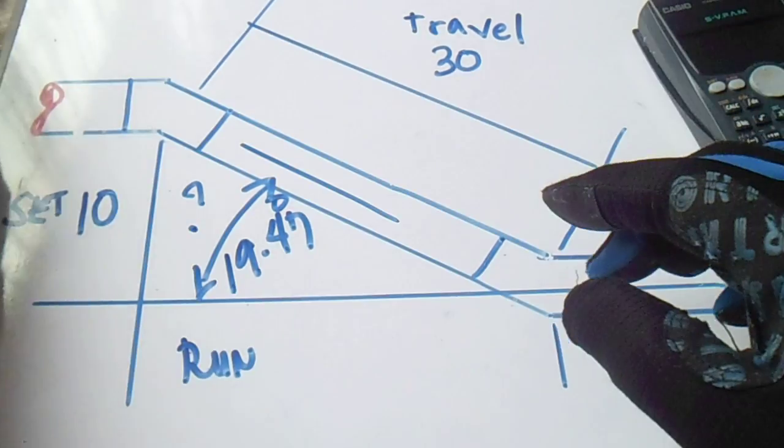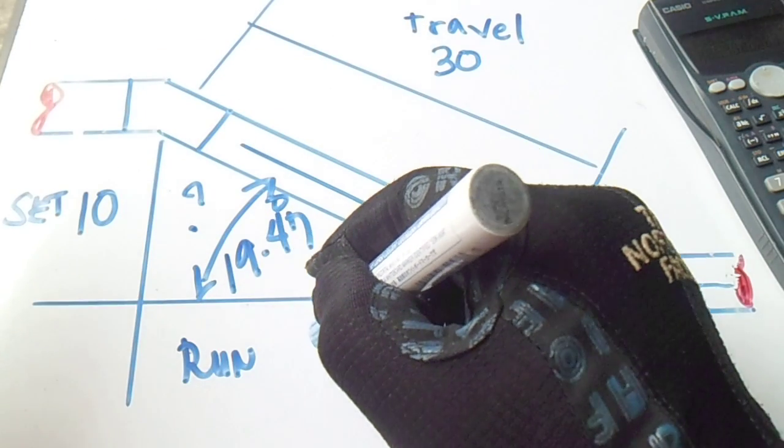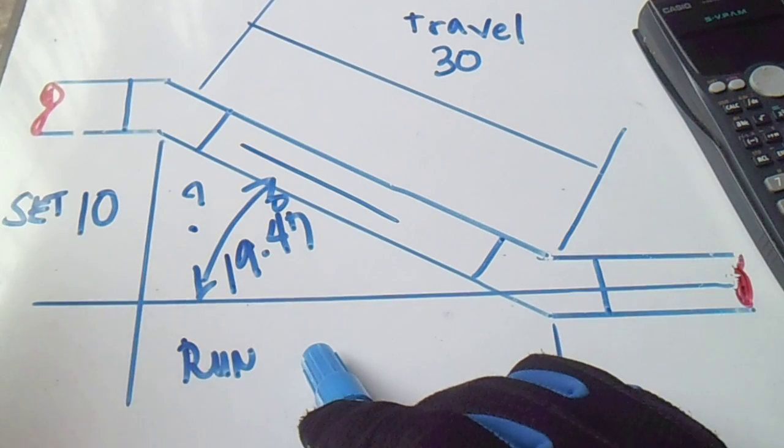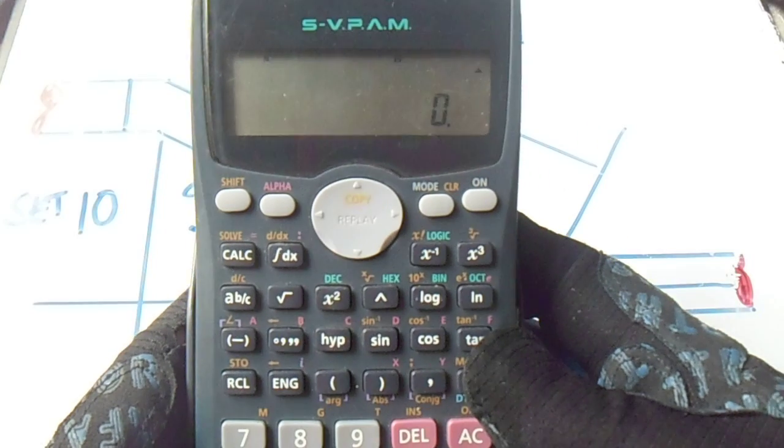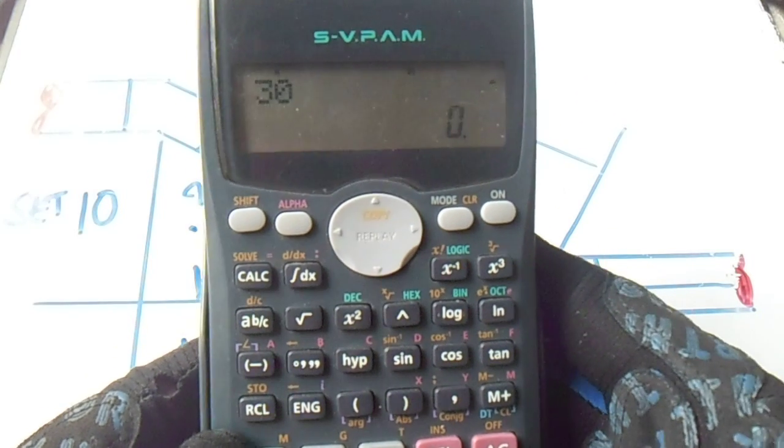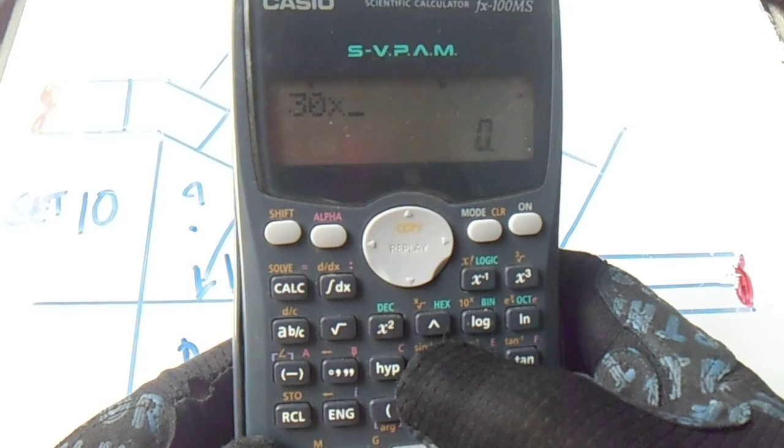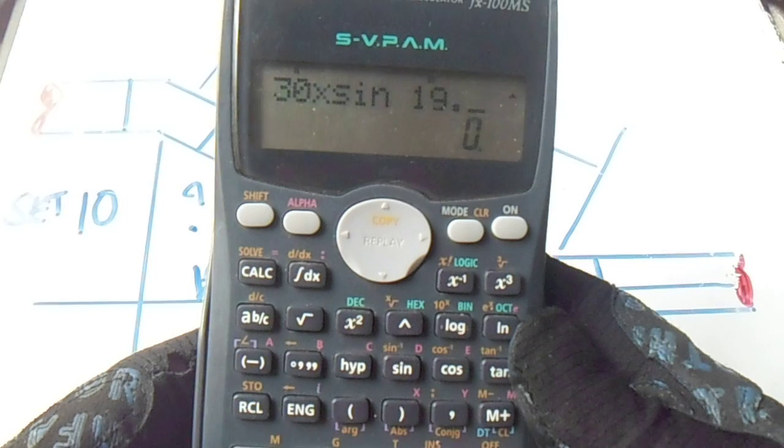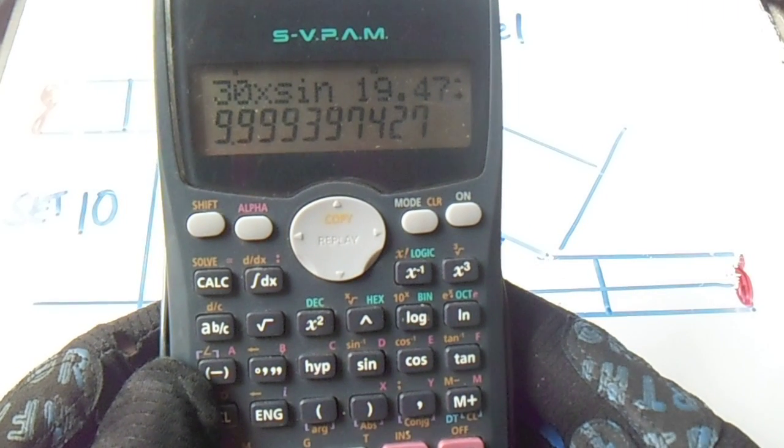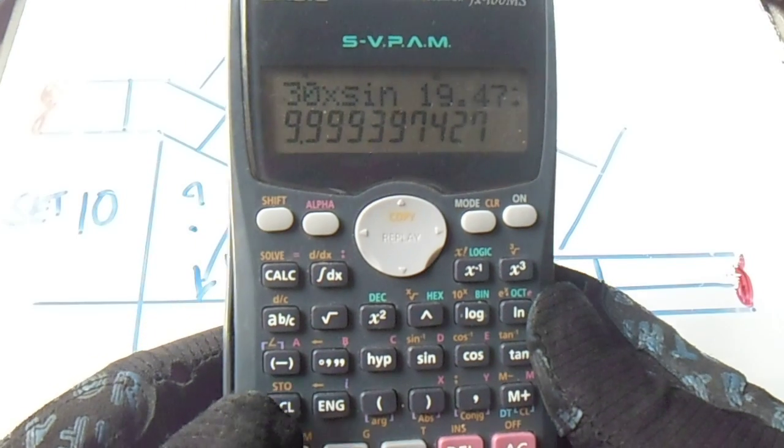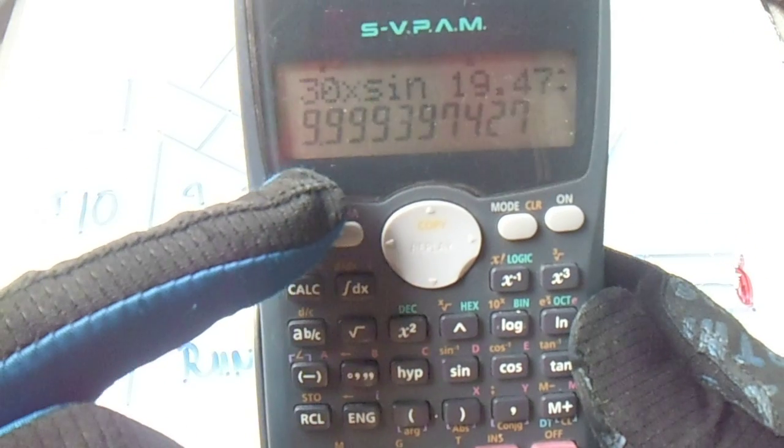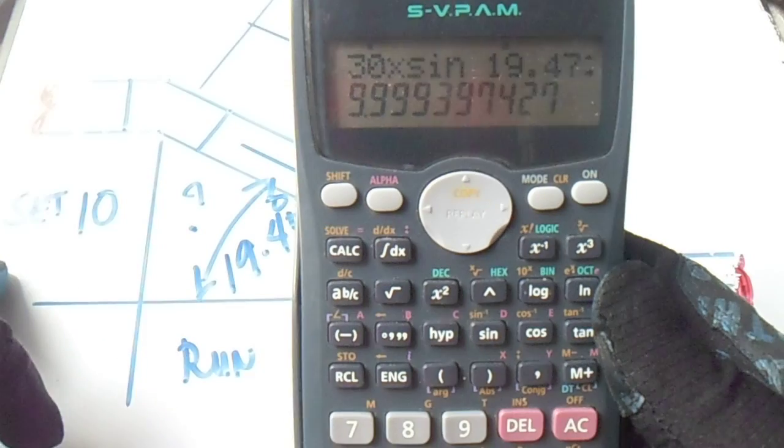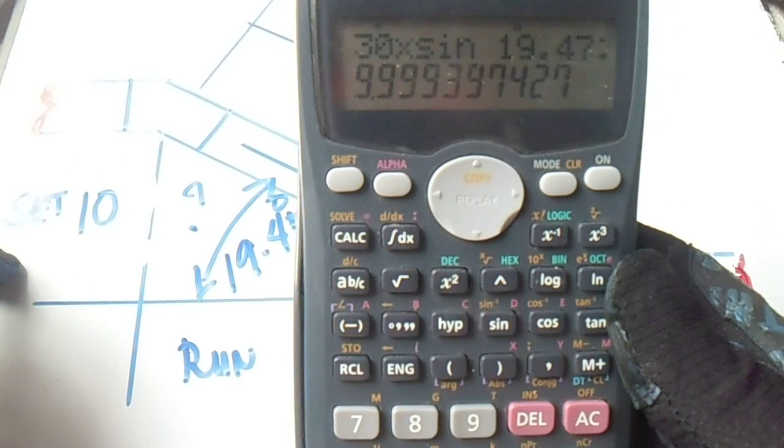We will compute also this run, and to compute this, this is the formula. So travel 30 multiply it by sine 19.47 degrees. So this is 10. I mean, we will compute the set, so the answer is 9.9. This is 9.9, so this is the answer for the set.